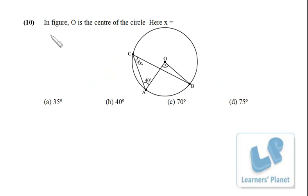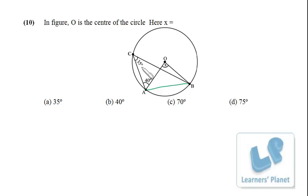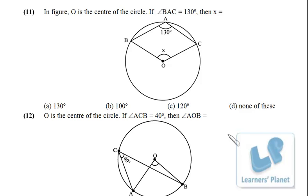A recap of concepts: O is the center. The angle at the center is double the angle at any point on the circle from the same arc. If the angle at the circumference is 35°, the angle at the center must be 70°. If angle BAC is 130°, the reflex angle at center from the same arc is 260°, making the total 360° and x = 100°. Similarly, if the circumference angle is 40°, the center angle is 80°.